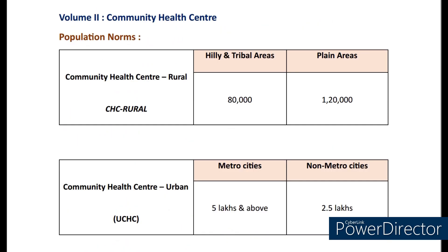Now coming to Volume 2, that is Community Health Centre. It is divided into two parts: one is Community Health Centre Rural, that is CHC Rural, and second is Community Health Centre Urban, that is UCHC. The population norms for CHC Rural include in hilly and tribal areas it's 80,000, and under plain areas it's 1,20,000. Whereas for UCHC, the population in metro cities is 5,00,000 and above, and in non-metro cities it's 2,50,000.